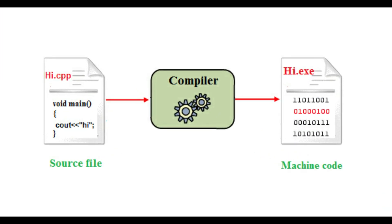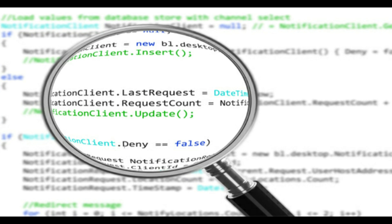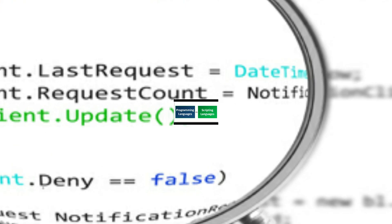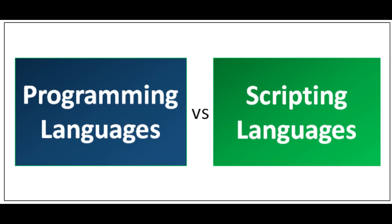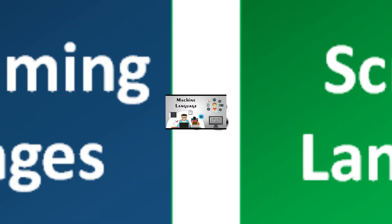To summarize: a compiler provides source code privacy, is platform dependent, and requires an extra compilation step, but reads and analyzes the code only once. An interpreter can work cross-platform, has no source code privacy, is slower, has no extra compilation delay, but reads and analyzes the code statement each time. Programming languages are used to create standard applications which can be installed based on the target platform. They use a compiler to convert high level language into machine language. Examples include C, C++, and Java.